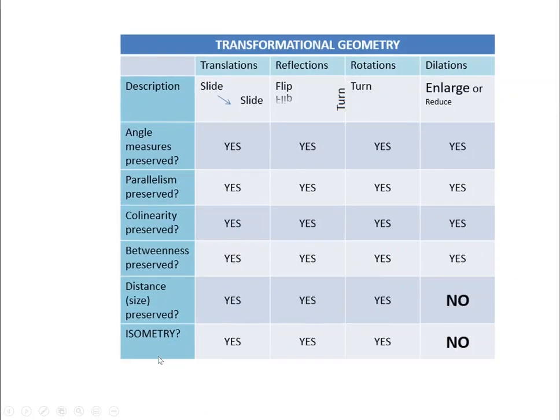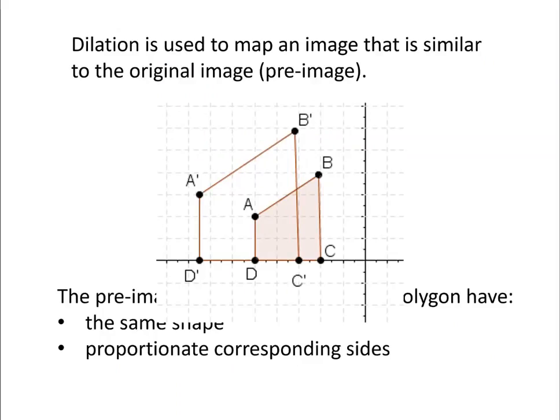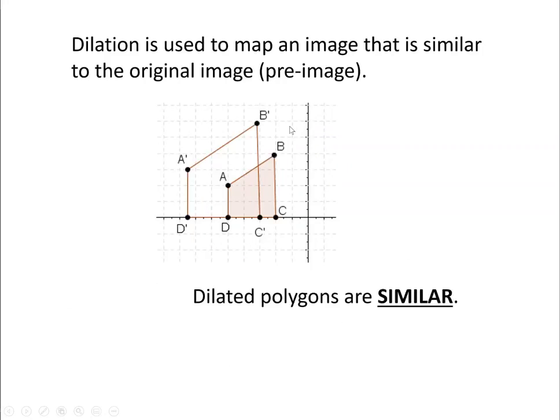All right, so in this case, the dilation gets bigger or smaller. Are the distances preserved? Is it isometric? Correct. Here you have a pre-image and the image. So they call your original one your pre-image and your new one your image. Also notation: this is A prime, B prime, to show that it's the new one.